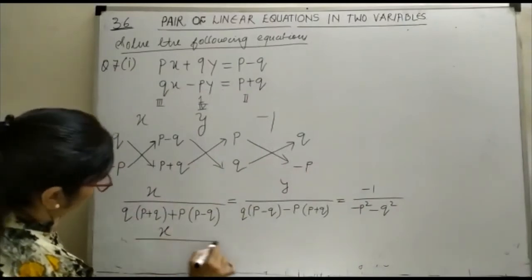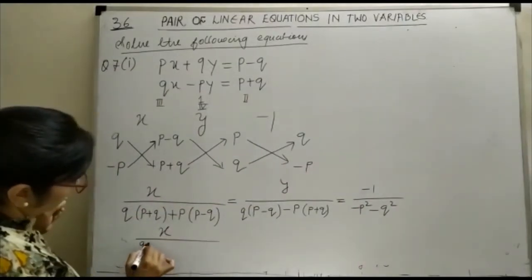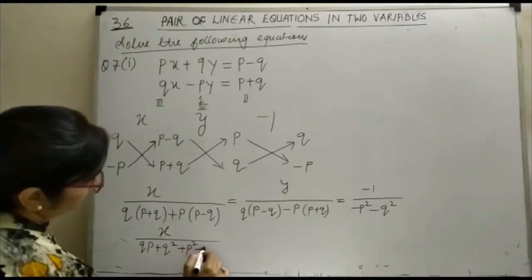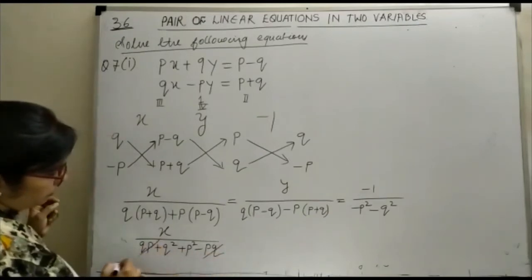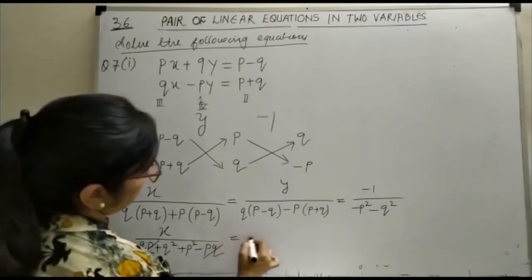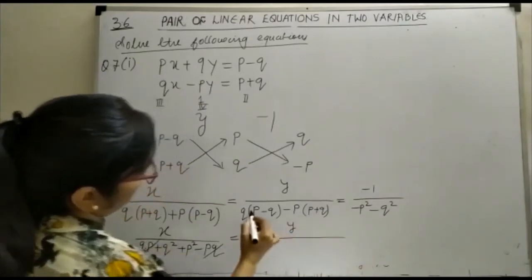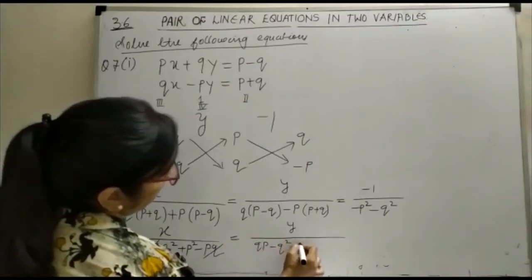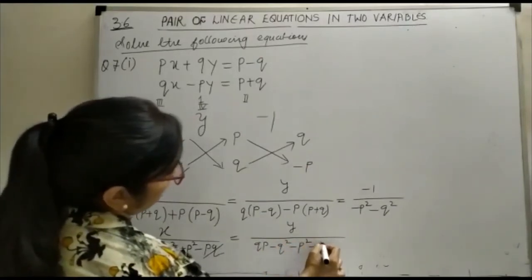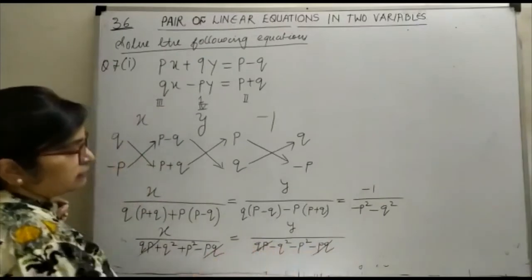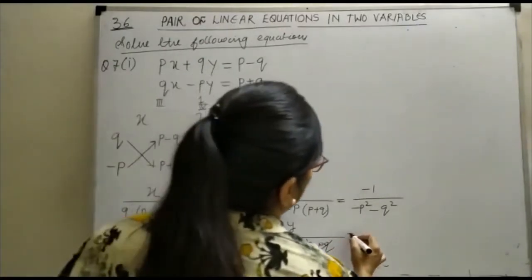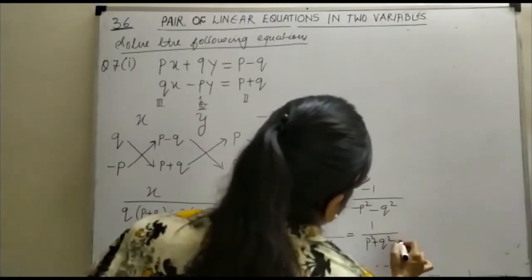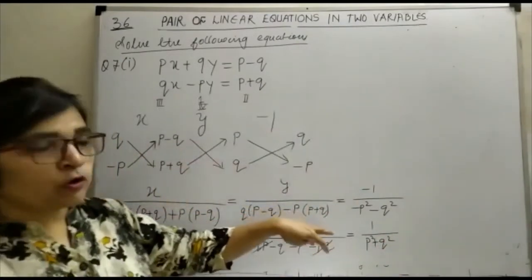This becomes x upon Q(P plus Q) squared plus P squared minus P cubed. Your P cubed terms are cancelled. This is equal to y upon Q(P minus Q) squared minus P cubed — again cancelled — and this is equal to 1 upon P squared plus Q squared, because we have taken minus as common.